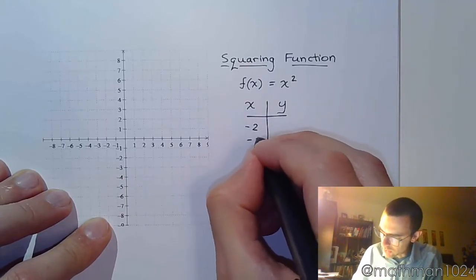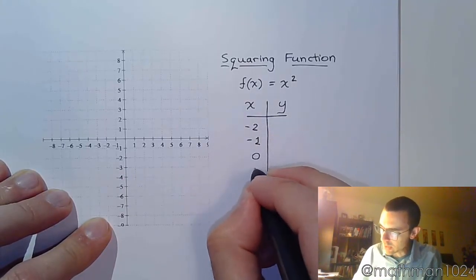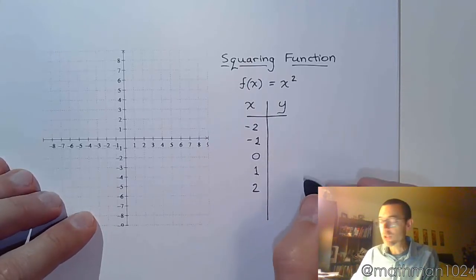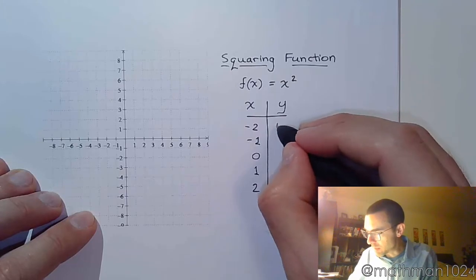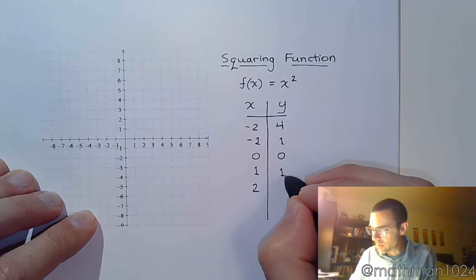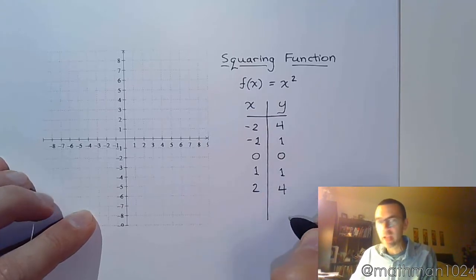So, I start with those key values, negative 2, negative 1, 0, 1, and 2. I plug these in and I square them. If I square negative 2, I get positive 4. If I square negative 1, I get 1, then 0, 1, and 4.